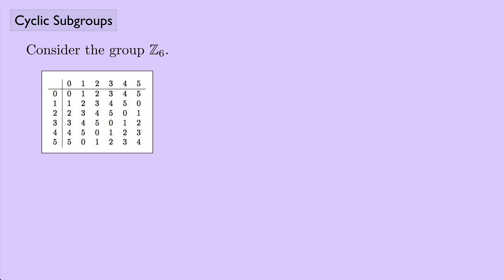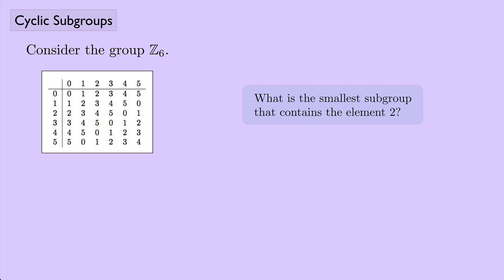The question is: what is the smallest subgroup that contains the element 2? If it contains 2, then by closure it would also have to contain 2 plus 2, and 2 plus 2 is 4, so we know 4 would have to be in there.